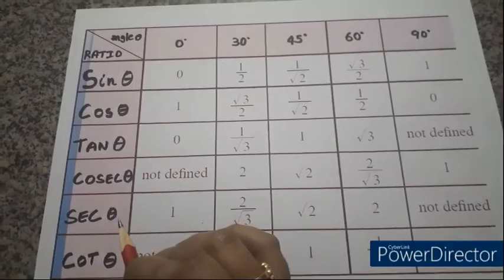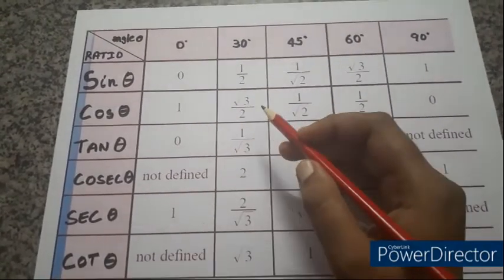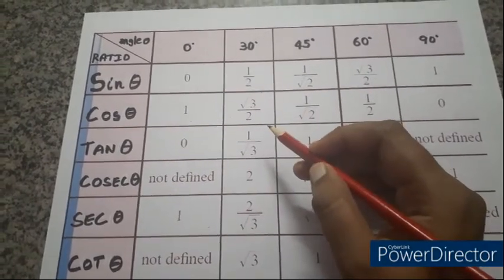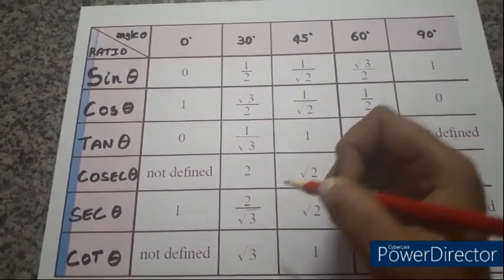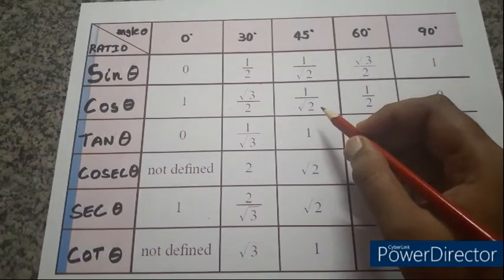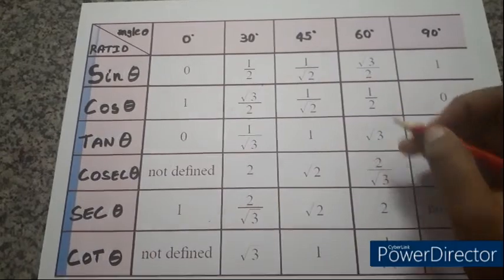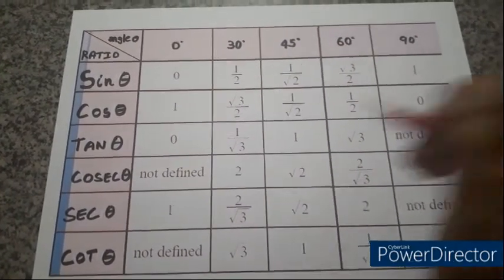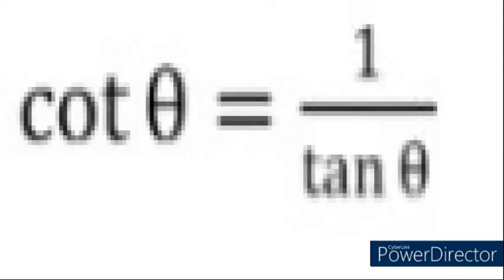Sec theta is the inverse of cos theta. Sec 0°: inverse of 1 is 1. Sec 30°: inverse of √3/2 is 2/√3. Sec 45°: inverse of 1/√2 is √2. Sec 60°: inverse of 1/2 is 2. Sec 90°: inverse of 0 is not defined or infinity.